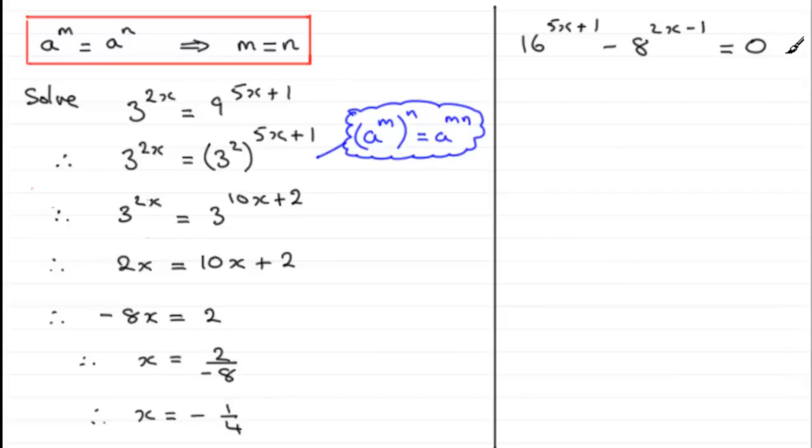Welcome back if you had a go. Well, first of all, what I notice is that I've got essentially three terms here. This one here, then minus my second term, 8 to the power 2x minus 1. And then my third term, it equals 0. And I did say at the beginning of this tutorial, you've got to reduce it to this kind of style, two terms. So I'm going to have to add this term, 8 to the power 2x minus 1, to both sides. And if I do that, I therefore have 16 to the power 5x plus 1 equals 8 to the power 2x minus 1. So I've got my two terms now.